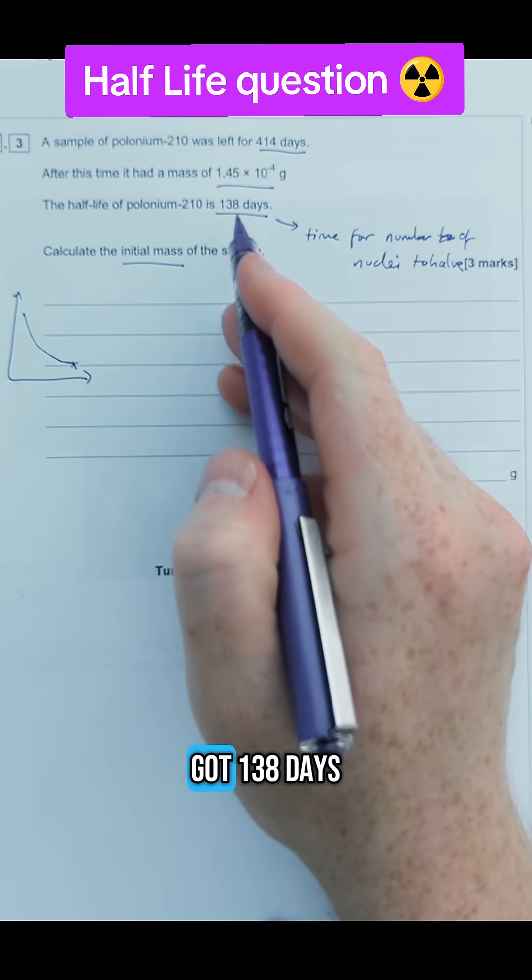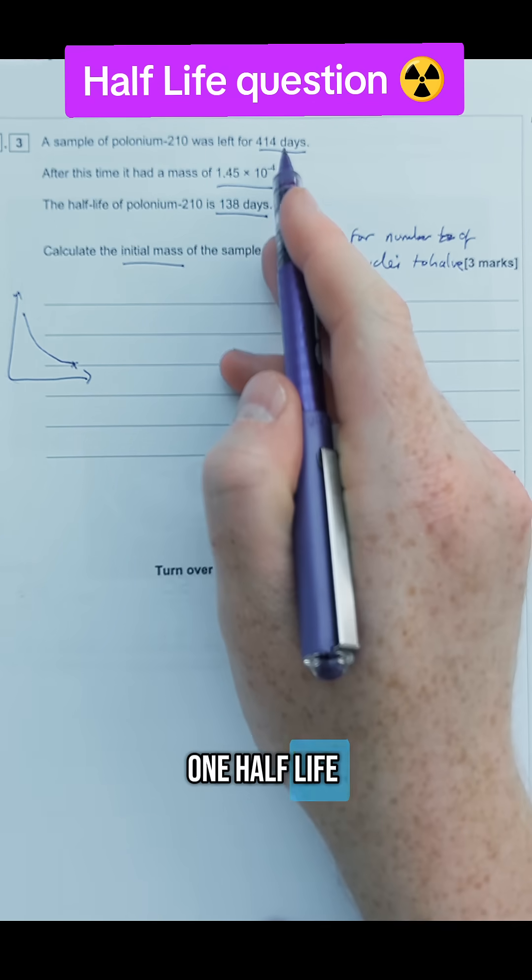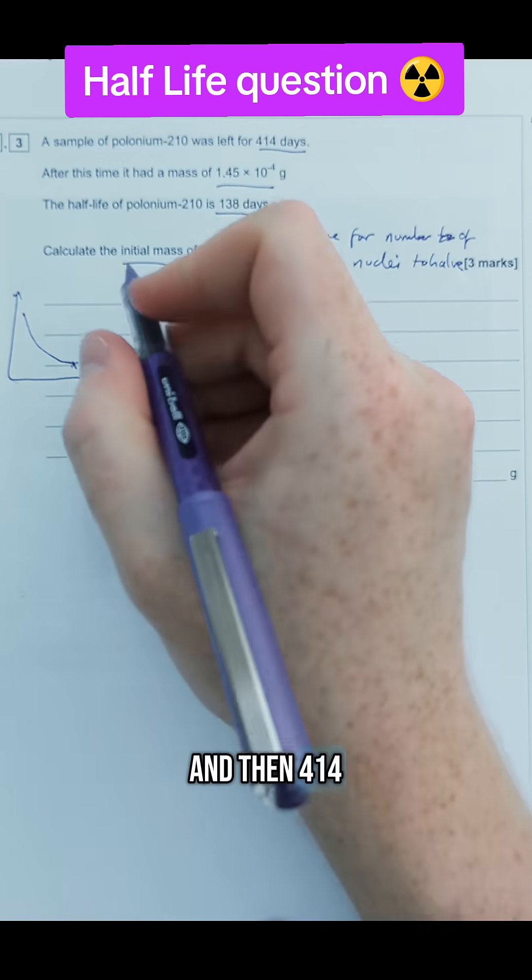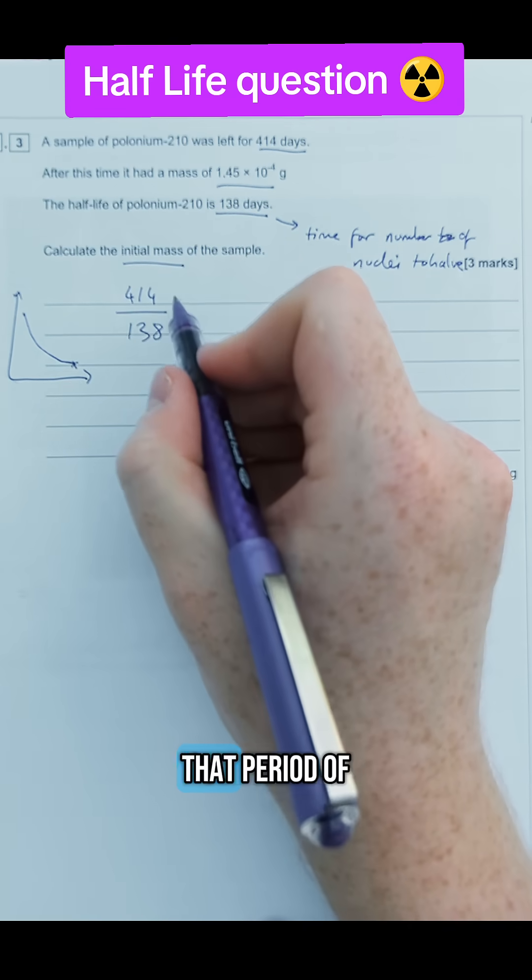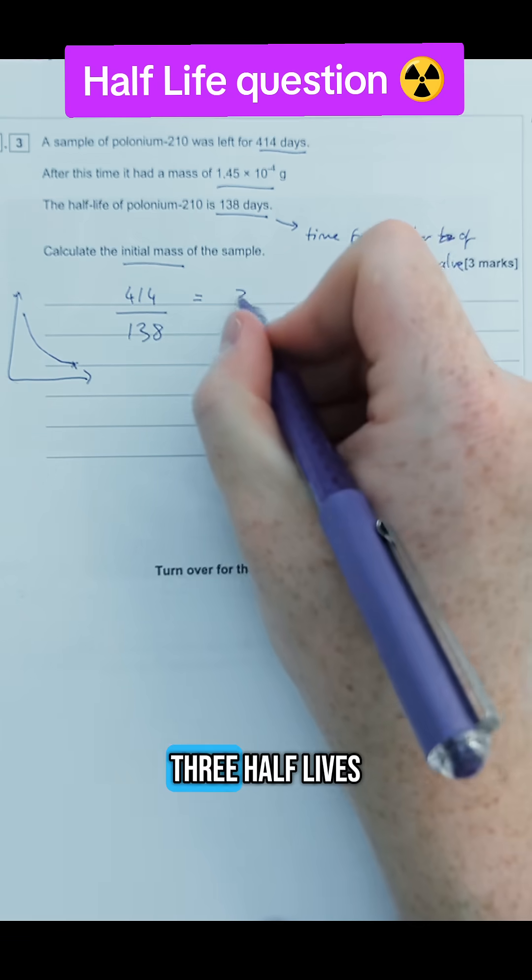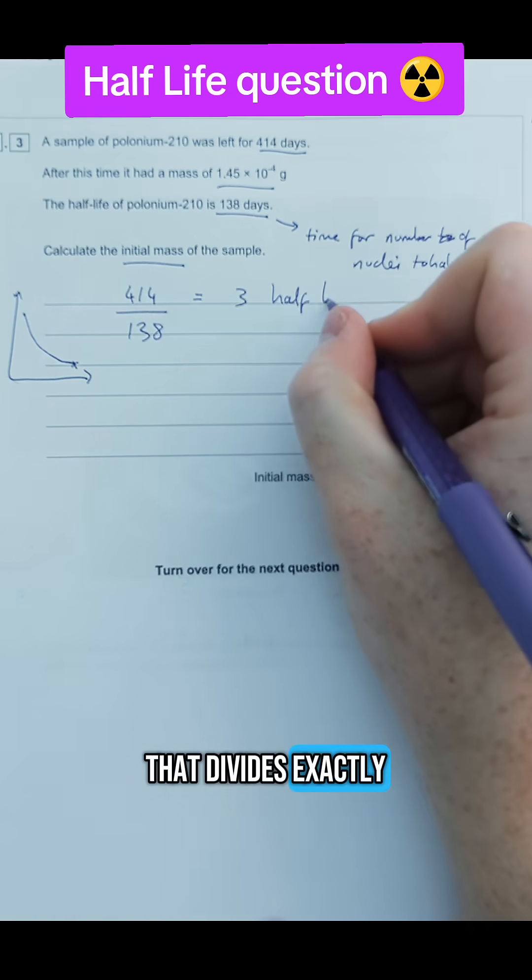So if we look carefully we've got 138 days, one half-life, and then 414 in total. If I divide those two numbers together I can find out that in that period of time we've got three half-lives. So it divides exactly into three.